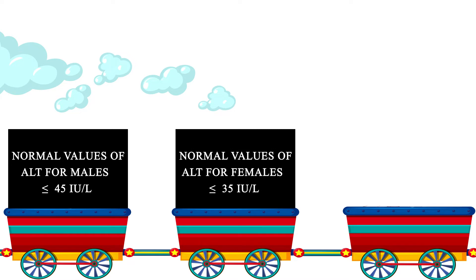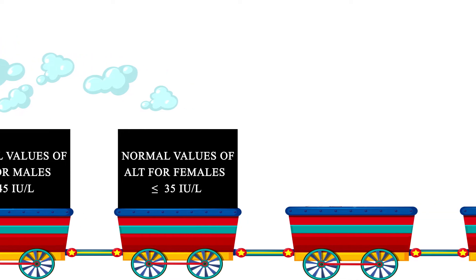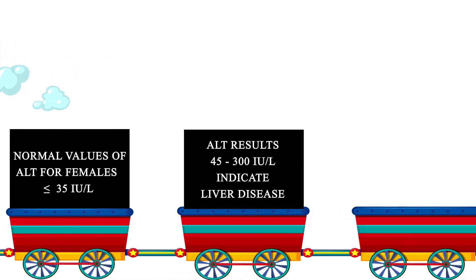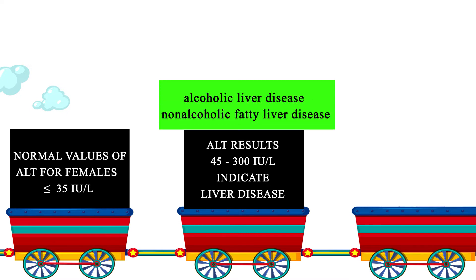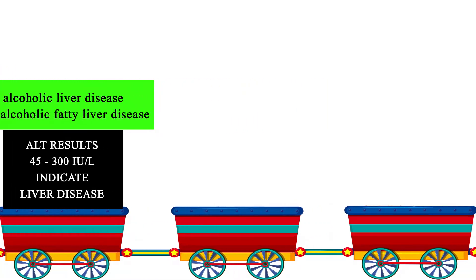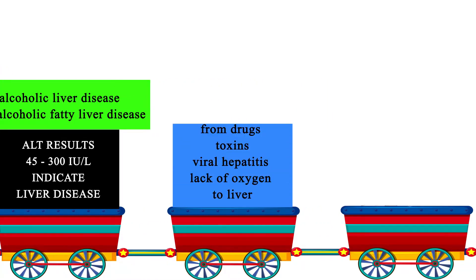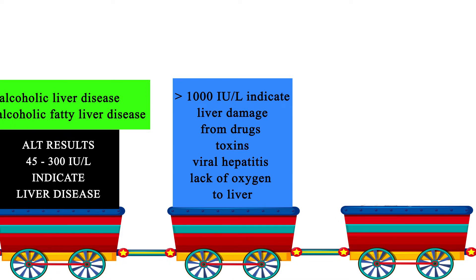The normal values of ALT for males is less than or equal to 45 international units per liter, and for females is less than or equal to 35 international units per liter. These results may vary from lab to lab. ALT results above 45 but below 300 international units per liter can indicate any kind of liver disease, like alcoholic liver disease and non-alcoholic fatty liver disease, or this may be normal for a particular person.